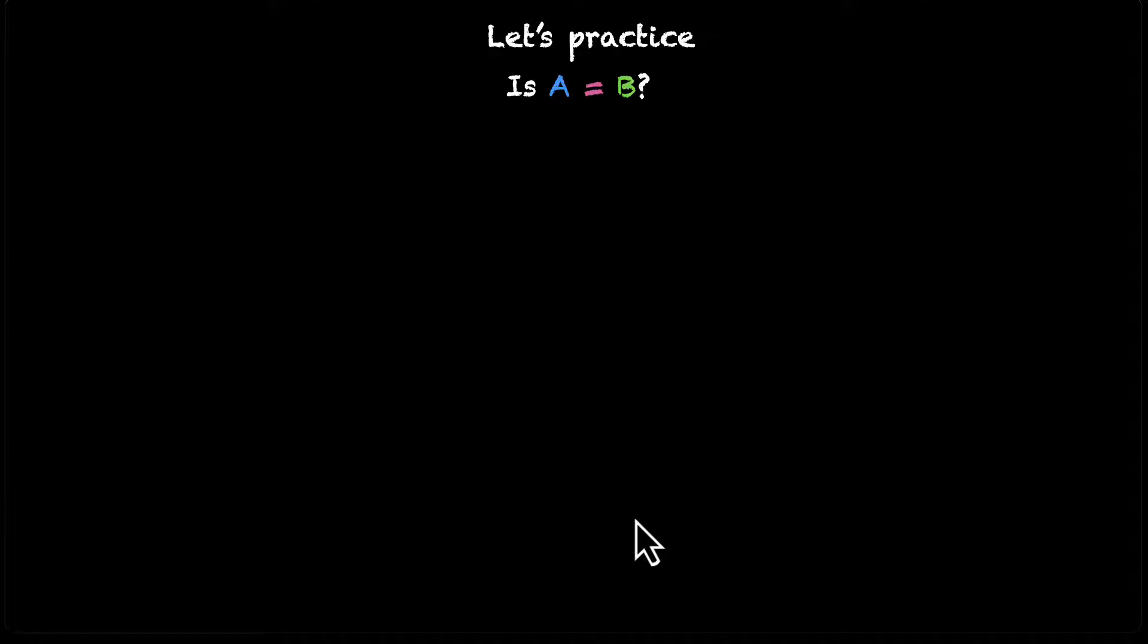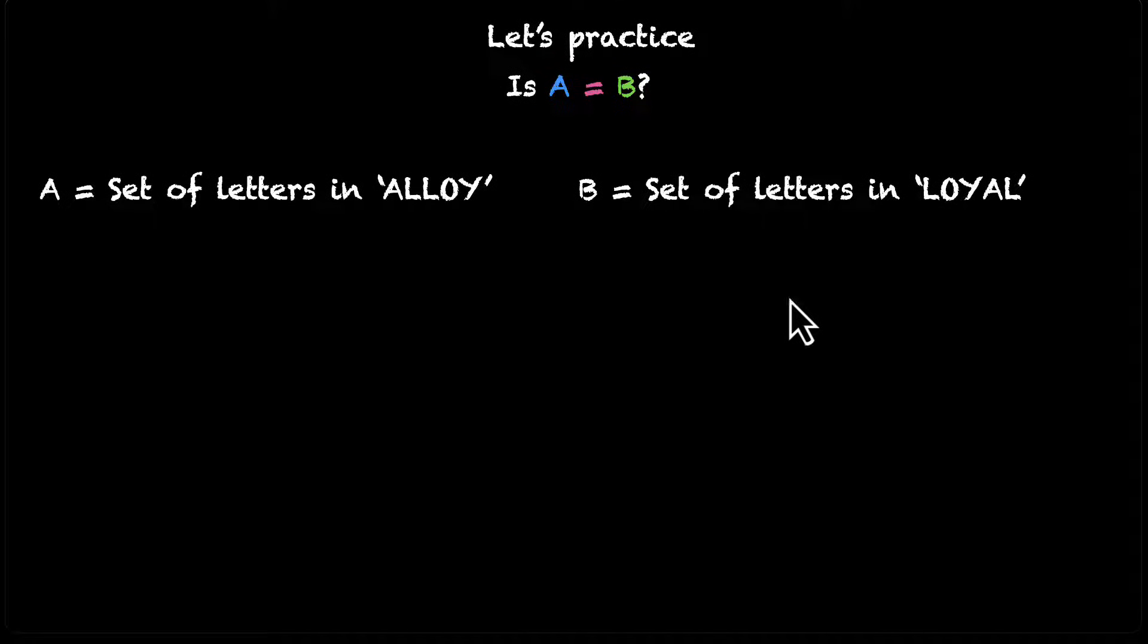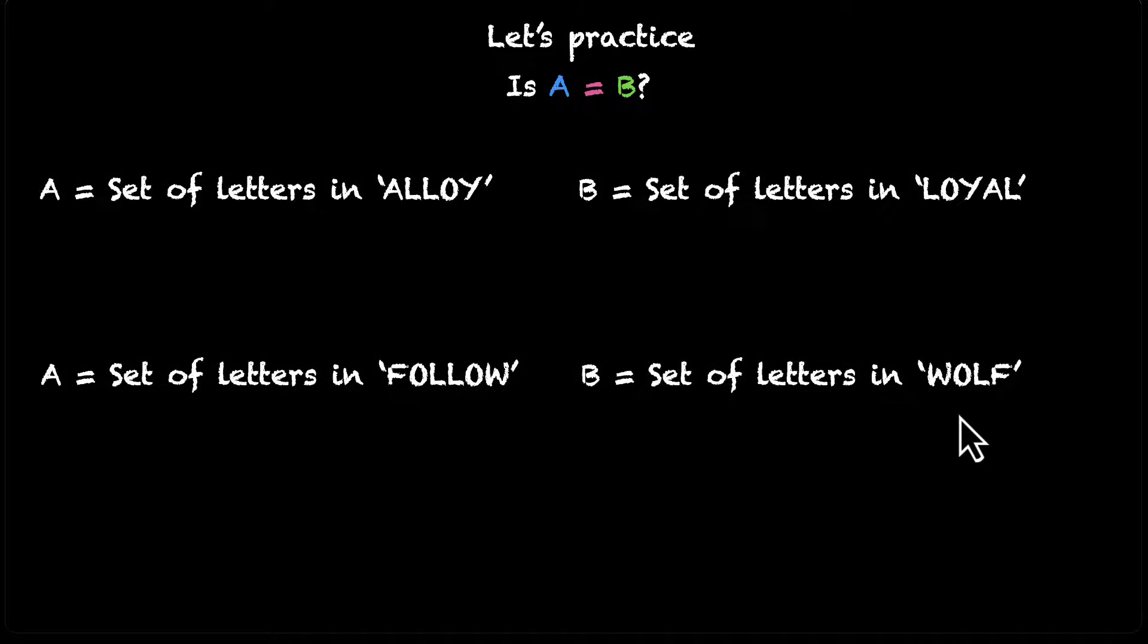All right. Let's do a few more. This is the set A. It's a set of letters in the word alloy. And set B is the set of letters in the word loyal. Are these two equal? What about this one? A, the set of letters in the word follow, and B, the set of letters in the word wolf. Are these two equal? Well, yes.